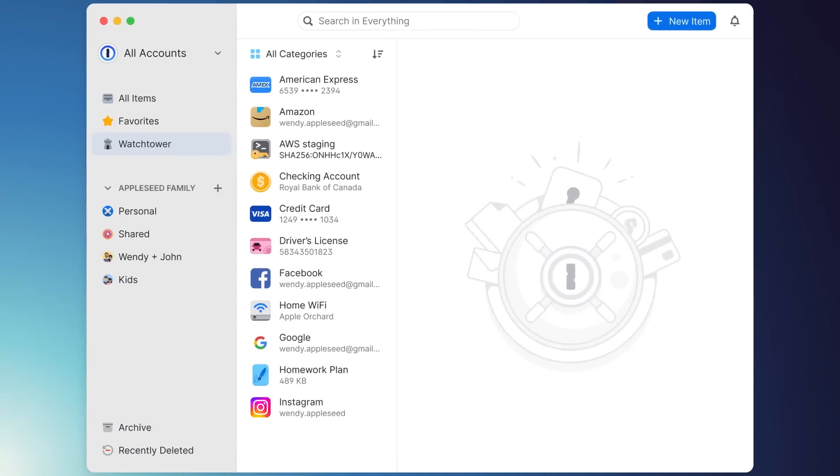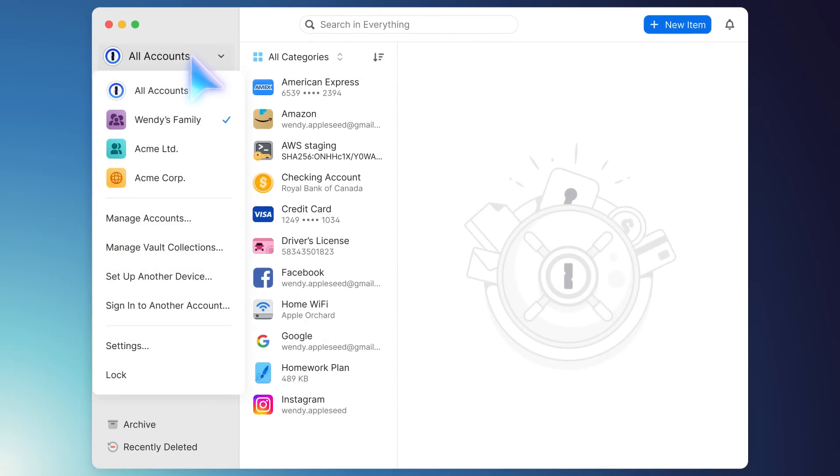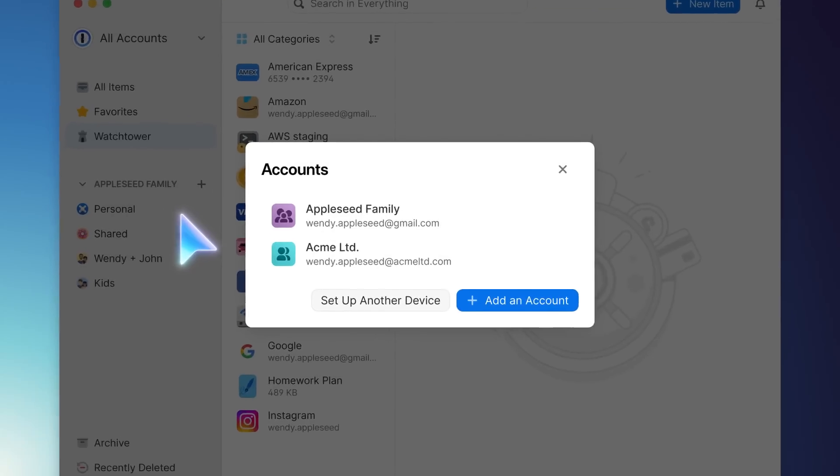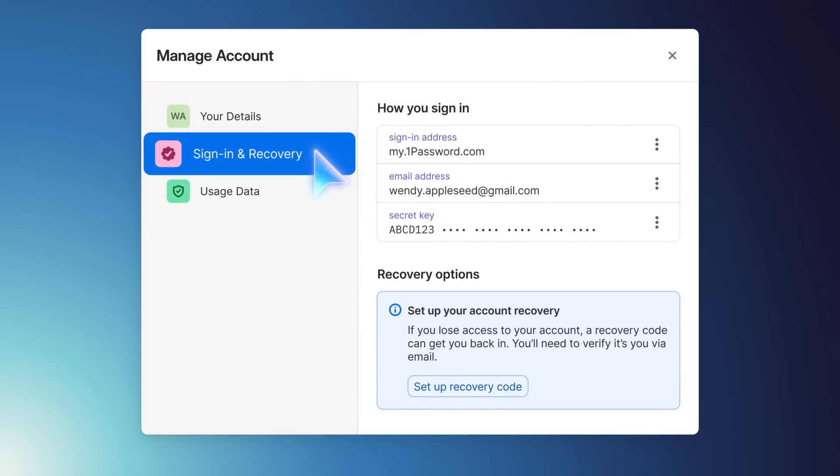Now to set one up, open the 1Password app and select your account in the top sidebar. From there, choose Manage Accounts. Next, pick the account that you want to create a recovery code for and open the Sign-In & Recovery tab.